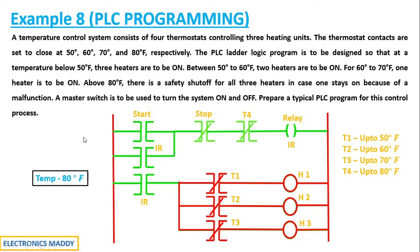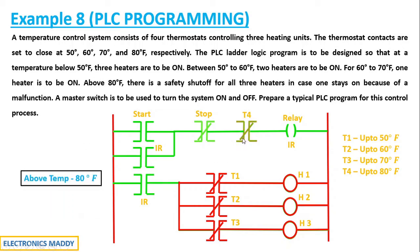Beyond 80°F, T4 should be turned on. When it is turned on, it acts as an open circuit because these are normally closed contacts. Consequently, no current flows through this path. The relay gets de-energized; since the same IR address is used, if this goes to zero, this will go to zero and the entire unit will be turned off.